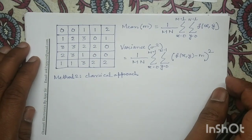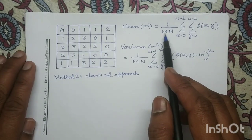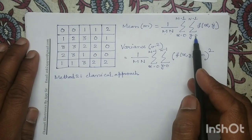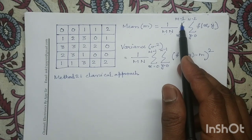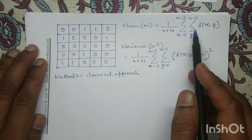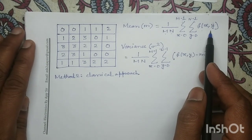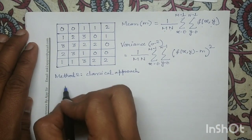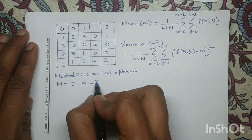In the classical approach, the mathematical equation is: mean m equals 1 by MN, where M represents the number of rows and N represents the number of columns, times summation x equals 0 to M minus 1, summation y equals 0 to N minus 1, of f(x,y). This means we sum all the pixel values present in the image. For this 5x5 image, M equals 5 and N equals 5.